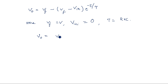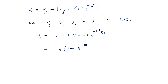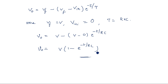So V_final is V, V_initial is 0, giving: V0 = V minus (V minus 0) times e to the power of minus t by RC, which equals V times (1 minus e to the power of minus t by RC). This is the expression for the output voltage during the exponential rising period.